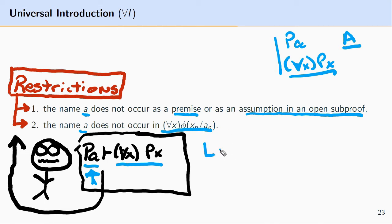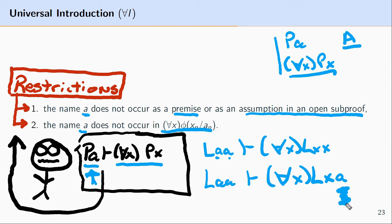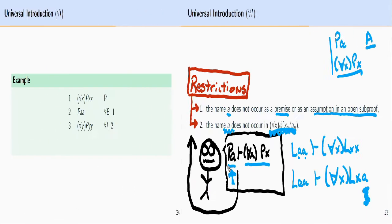The second restriction is that the name A does not occur in the resulting universally quantified formula. For example, from Alfred loves himself we could reason to for all x, Lxx — provided A is not found as a premise or assumption in an open sub proof. But we couldn't reason from an individual loving themselves to for all x, Lxa, meaning everyone loves one single individual A.